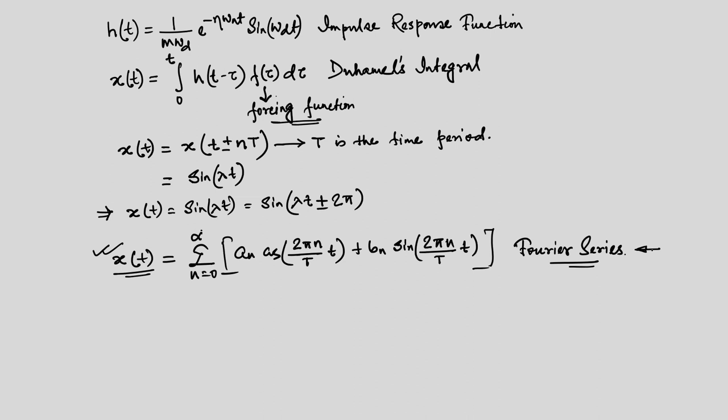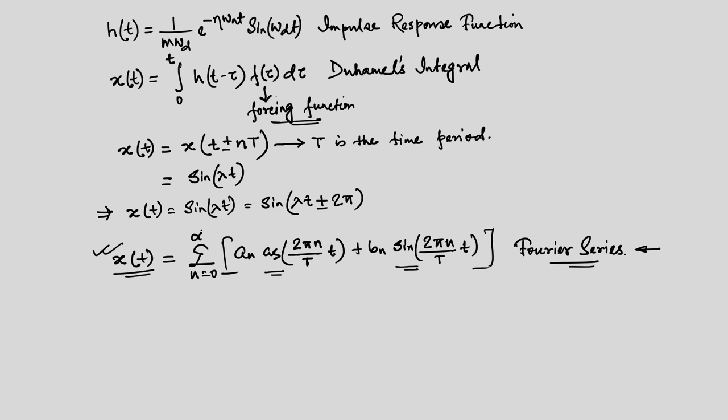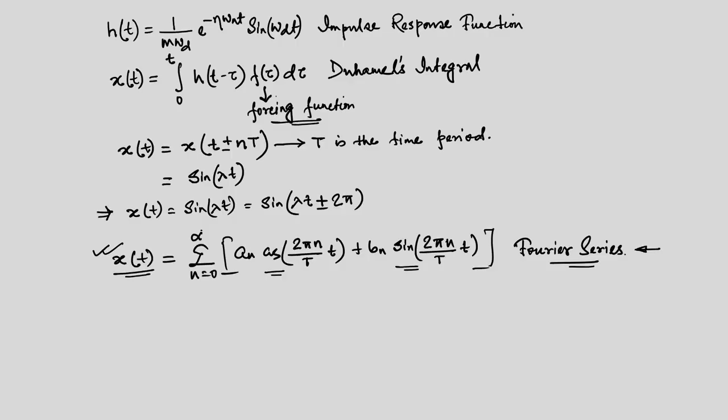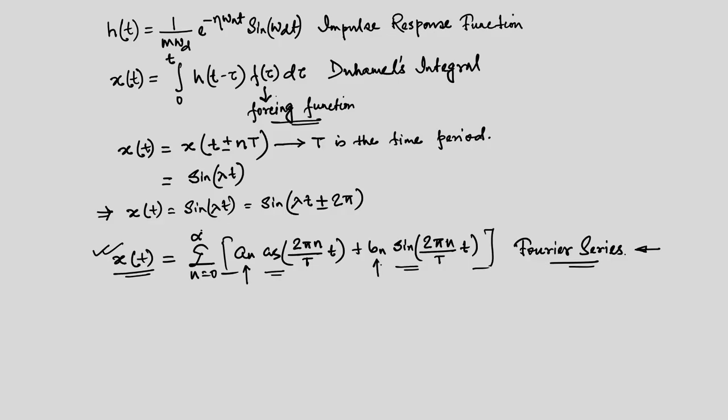What is so special about it? If you look at the right hand side, we started with a function x of t, but now on the right hand side we have cosine and sine functions. The advantage is that for these two functions we already have derived the closed form expression. So if I want to find out the response due to a forcing function f of t, and if we can represent that in terms of Fourier series with only sine and cosine terms, then we know the solutions — our only task is to find out the constants a_n and b_n.